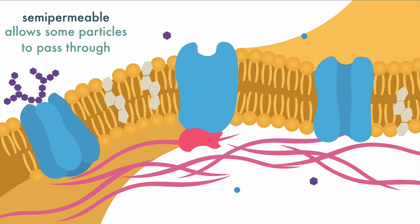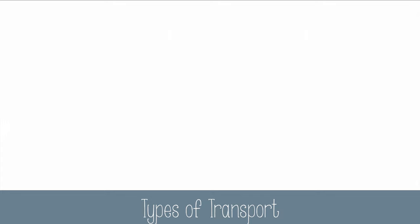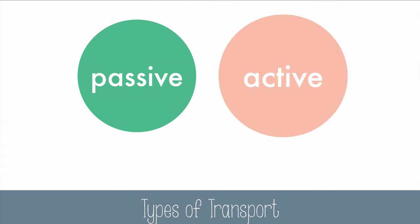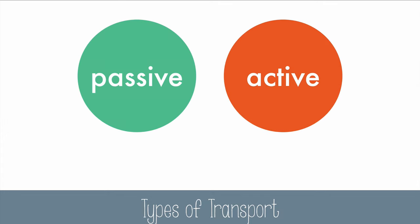There are two main ways that particles can get through the cell: passive transport or active transport. Passive transport requires no added energy, but active transport does require added energy.